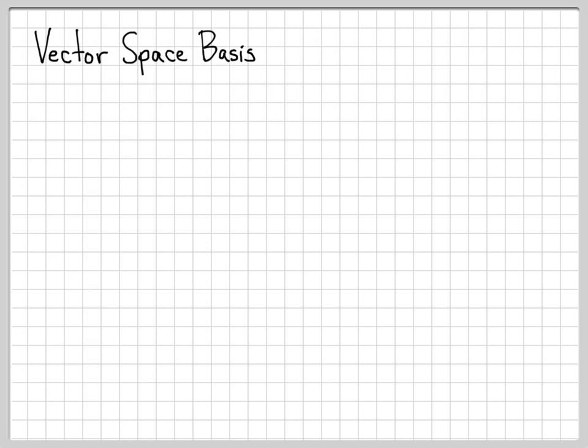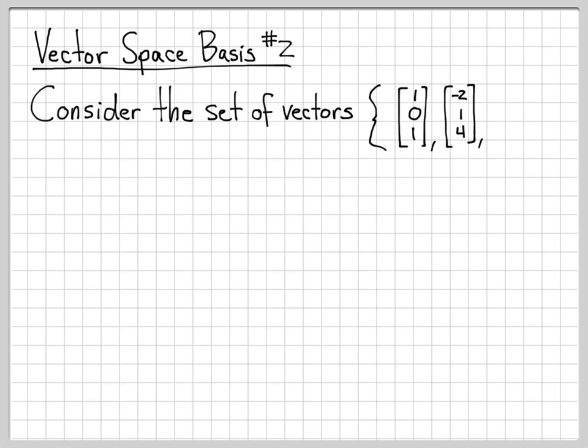Let's take a look at another similar example. In the last video, we were given a set of three vectors and asked to find if these vectors formed a basis for R³, and they did because they were three linearly independent vectors.